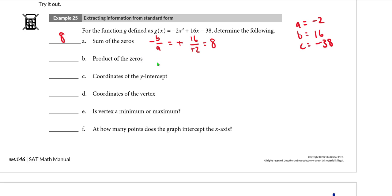The product of the zeros, remember from the chart, the product of the zeros is C over A. In this case, we have negative 38 over negative 2. And I'm not allowed to use my calculator here. So I'm going to need to know that 38 divided by 2 is 19. So the product of the zeros is going to be 19. The coordinates of the y-intercept, remember that the y-intercept is simply the C value and my C value is negative 38. So the coordinates of the y-intercept are going to be 0 comma negative 38. X coordinate 0, Y coordinate negative 38.